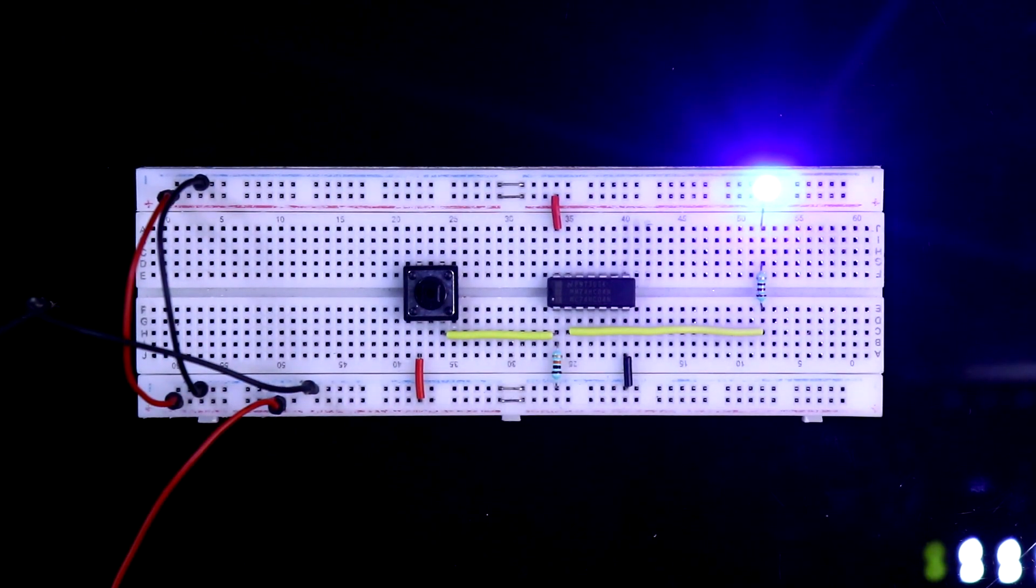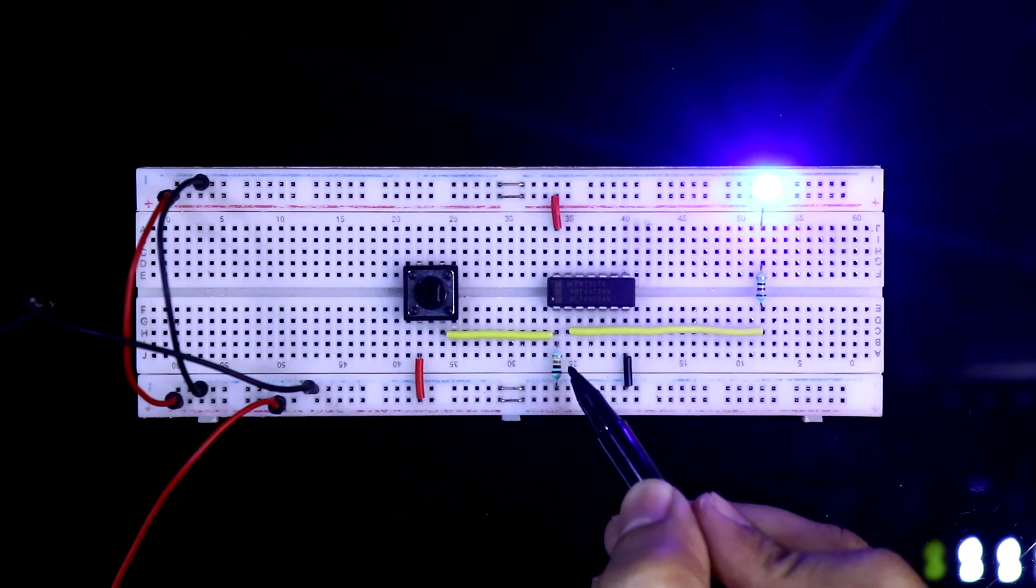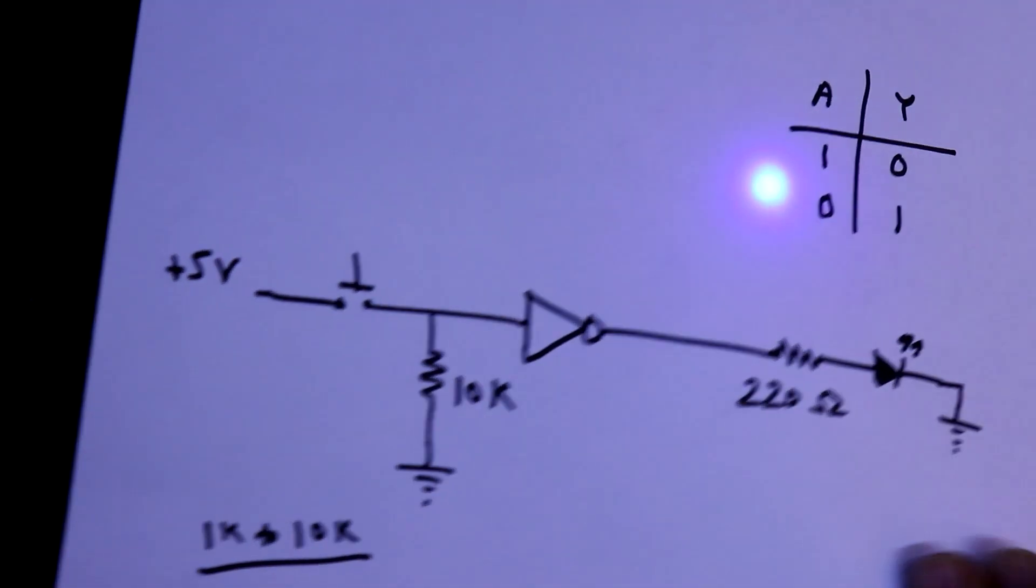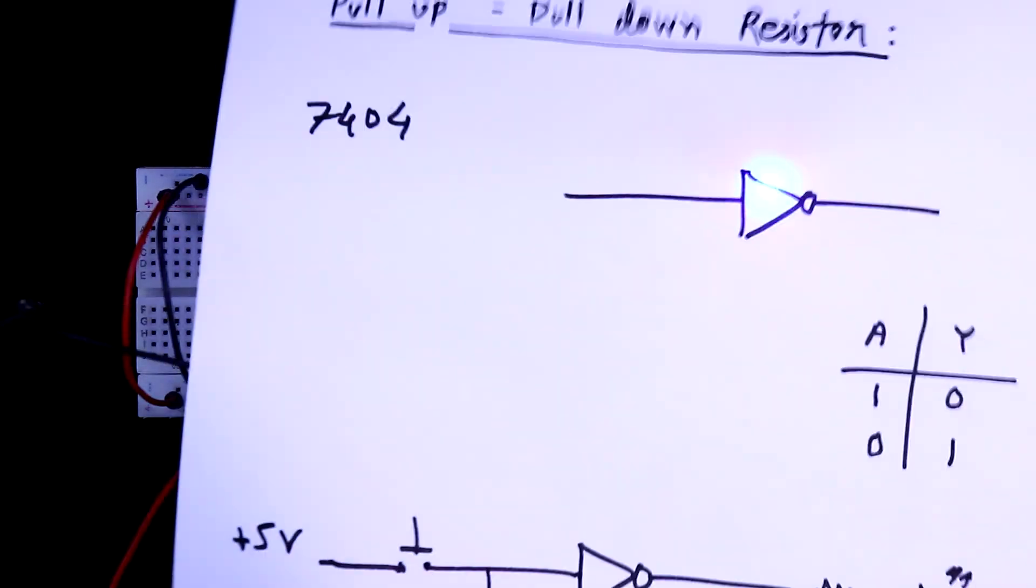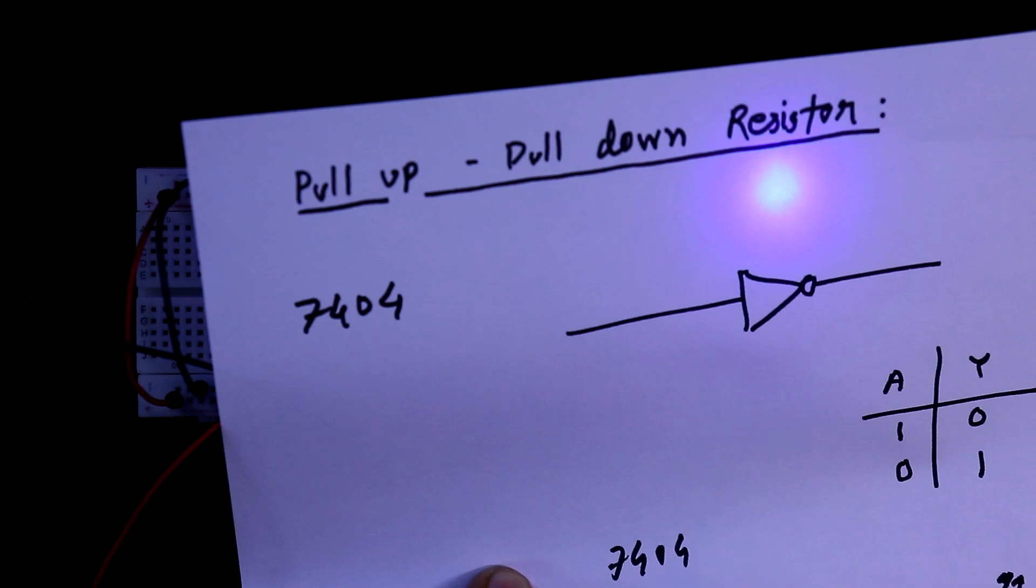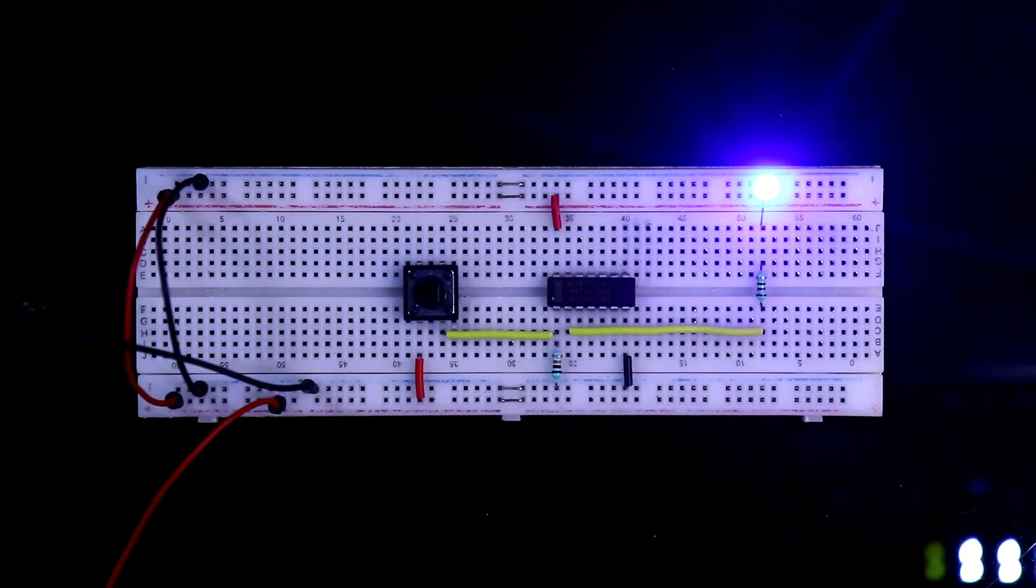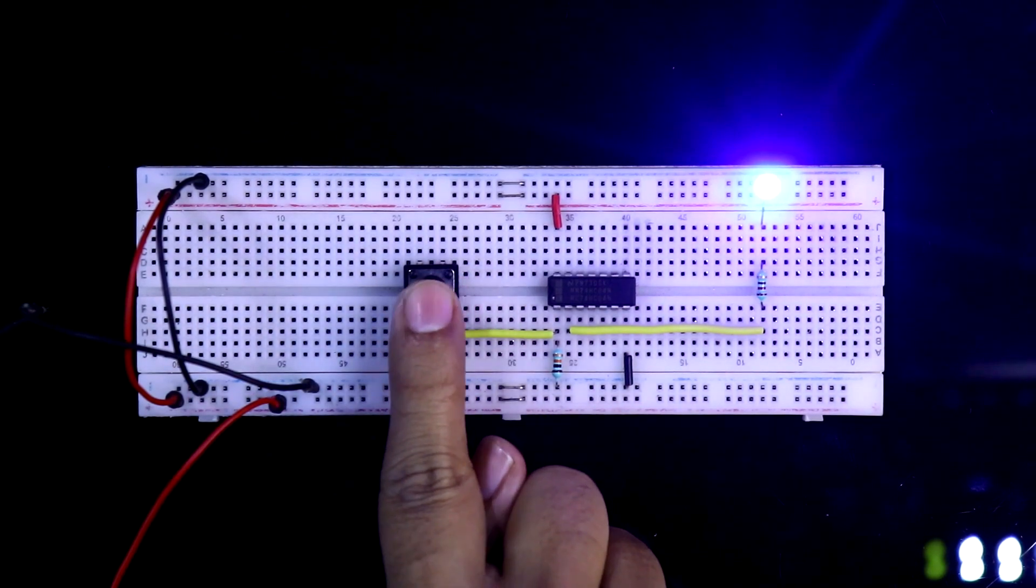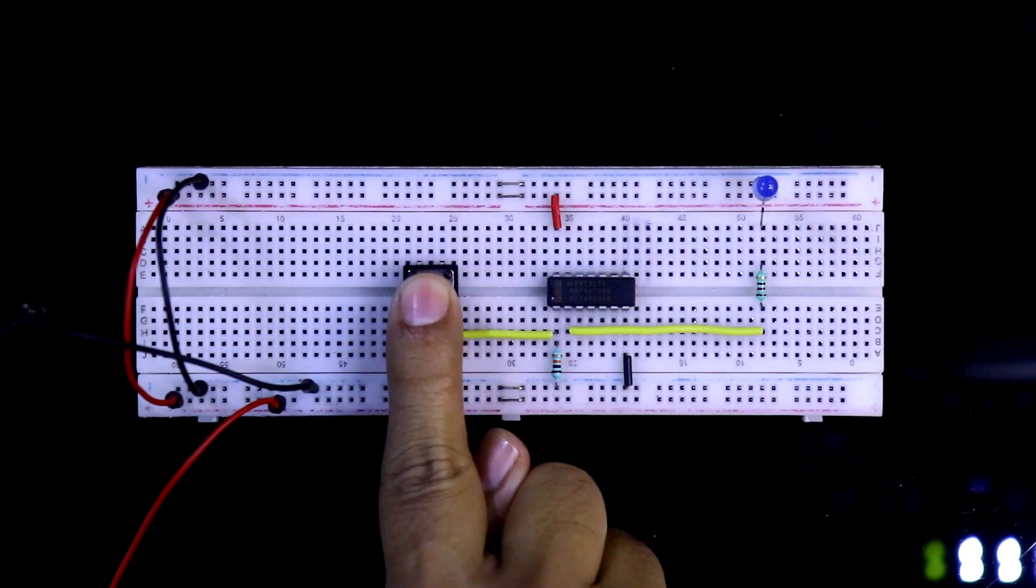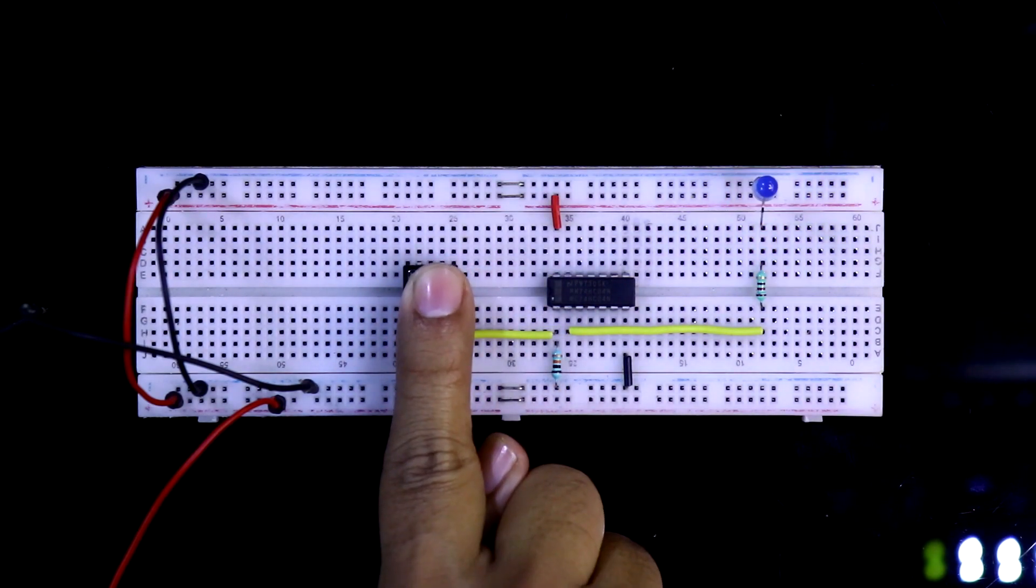Now as you can see, this pin number 1 is connected with 10 kilo ohms resistor and it is connected to the ground. As I have shown here, this is 7404 IC, pin number 1, pin number 2. Now see, if I press the switch, now we are getting the proper output or the correct output.